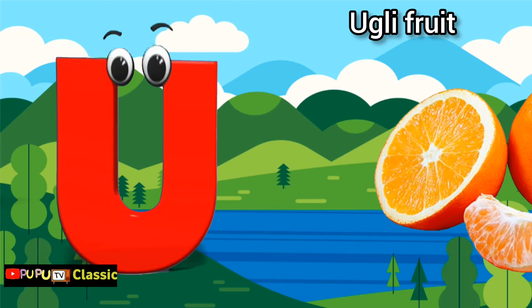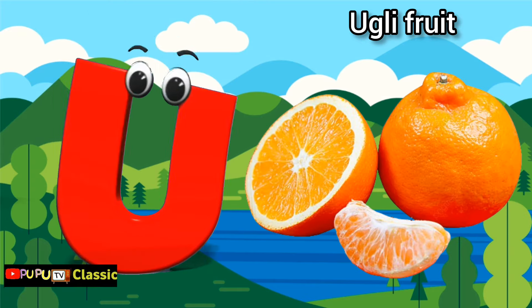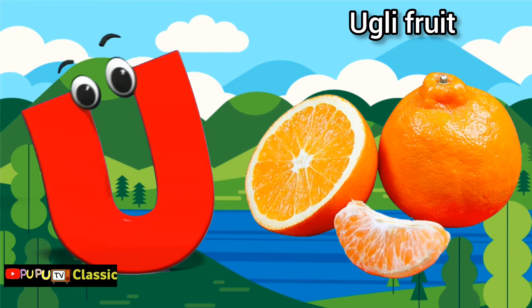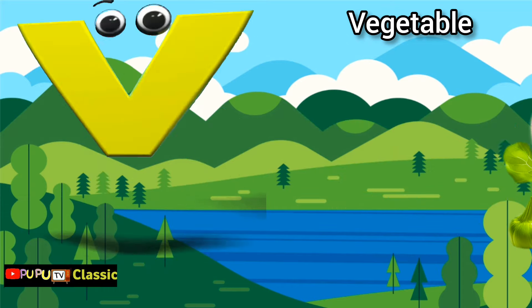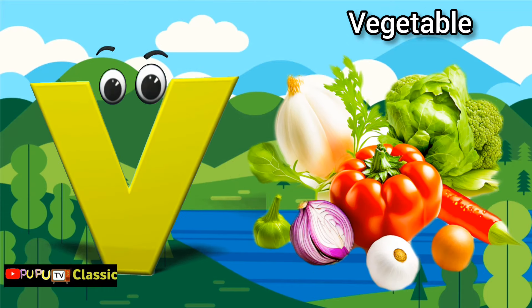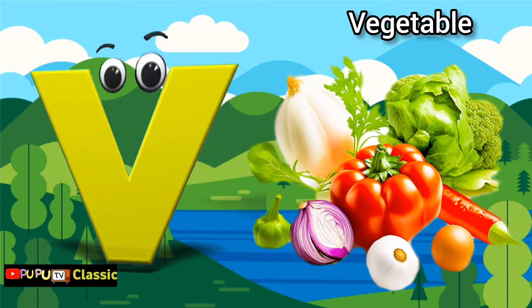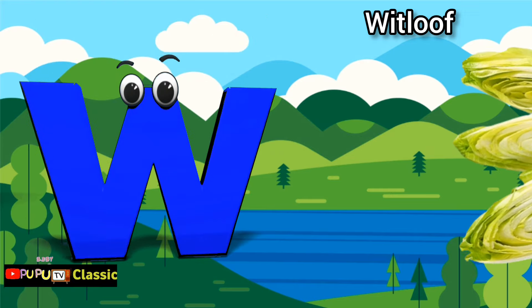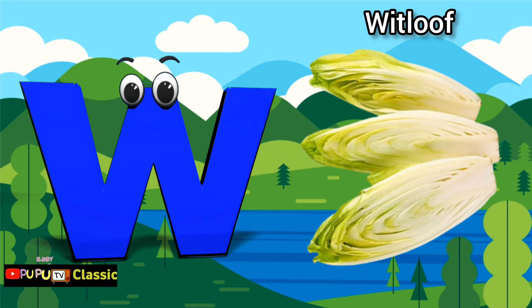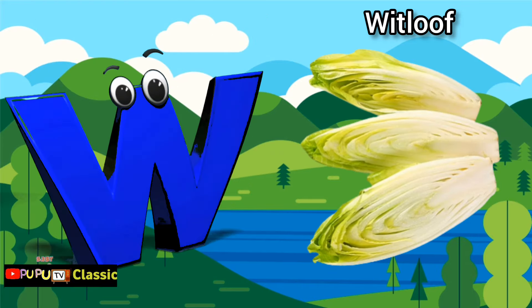U is for ugly fruit, ugly fruit. V is for vegetables, vegetables. W is for witloaf, witloaf.